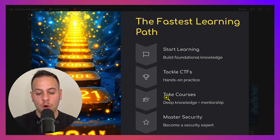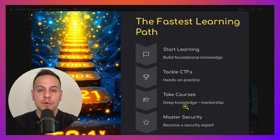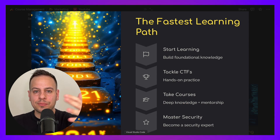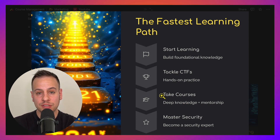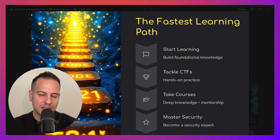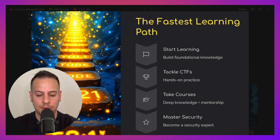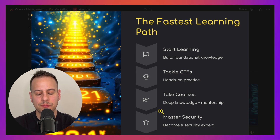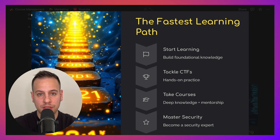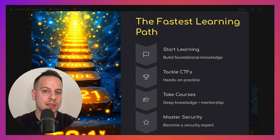A lot of people like to combine CTFs with a course. The course helps you build deep knowledge — both theoretical and practical. Some courses, like the smart contract hacking course, also give you access to a private Discord community where you can get mentored by teachers or other students going through the same journey. Once you complete CTFs and courses, it's time to do the real thing: bug bounty programs, auditing competitions, freelance auditing clients, or applying to a job at a Web3 security firm.